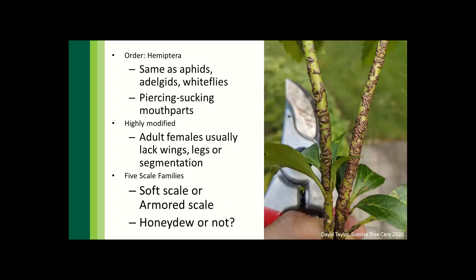Breaking it down further, there are five scale families, but really there are two that we deal with in the landscape as arborists — soft scales and armored scales. The key distinguishing factor is whether there's honeydew: the honeydew secreted from soft scales, or not.